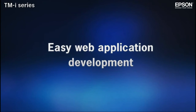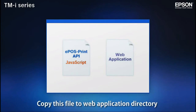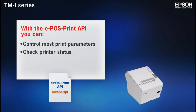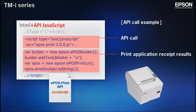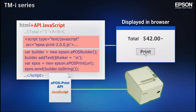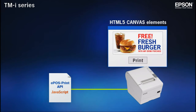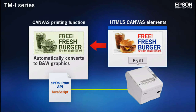With Epson technology, web application development is amazingly easy. Our JavaScript ePosPrint API makes it possible to check printer status and control a wide range of print parameters. Simply follow the instructions in the manual to invoke the JavaScript and enable your application to send XML data. The API's canvas printing function automatically converts HTML5 canvas elements to black and white graphics before sending them to the printer, so you can even include browser fonts and handwritten text in your printed receipts.